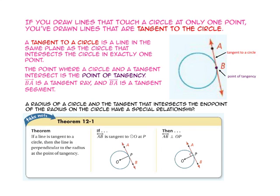If you draw lines that touch a circle at only one point, you've drawn lines that are tangent to the circle. A tangent to a circle is a line in the same plane as the circle that intersects the circle in exactly one point. If you look at line AB, that is a tangent to a circle. The point where the circle and the tangent intersect is the point of tangency. Point B is the point of tangency.